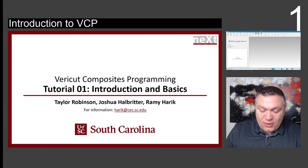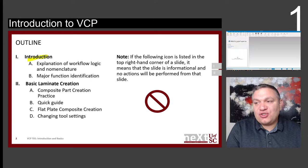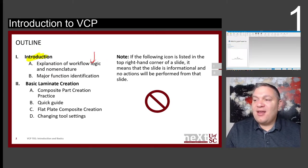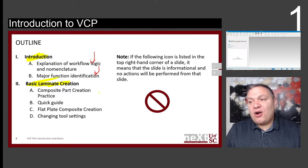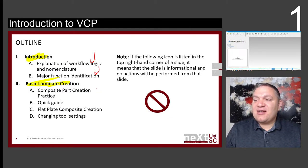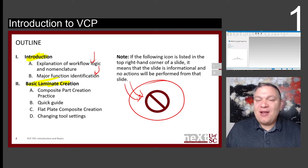Looking at the outline, we're going to have first an introduction where we'll explain the workflow logic, how we name things, and the major functions. Then we'll have a basic laminate creation where we do our first exercise together. It's important to highlight that whenever you see the sign, this means the slide is for information and you don't need to be clicking anything.